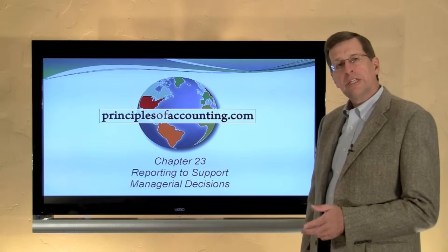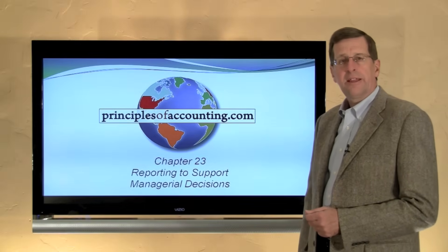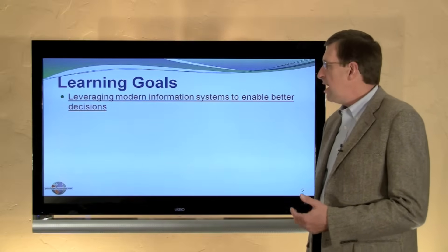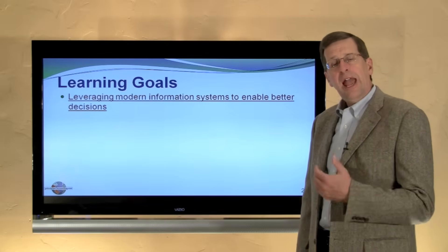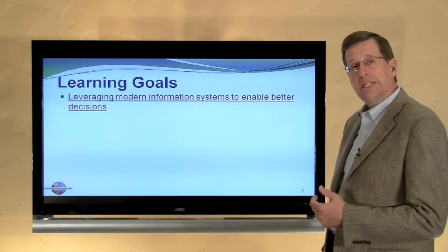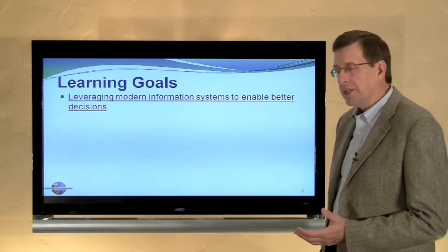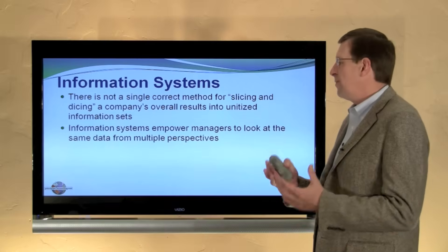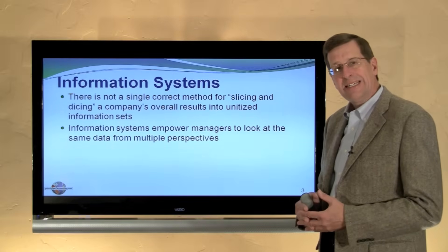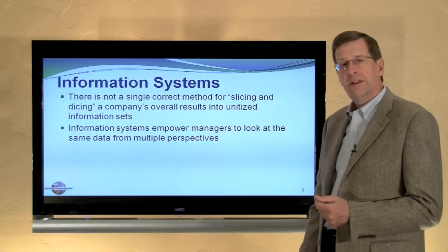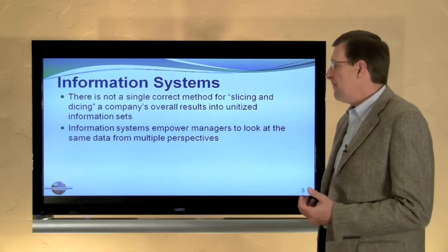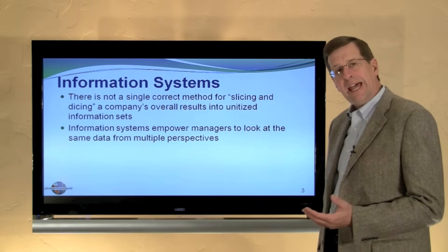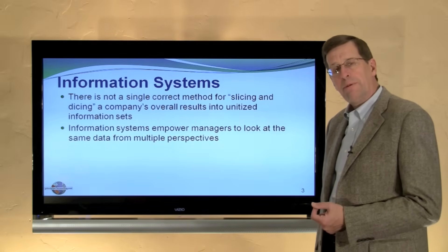I'm Larry Walther. This is PrinciplesOfAccounting.com Chapter 23. In closing this chapter, I want to show how we can leverage modern information systems to enable better decision making. Recognize that there is not a single correct way for slicing and dicing a company's overall results into unitized information. Instead, information systems should empower management to look at the same data set from multiple perspectives.